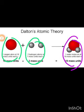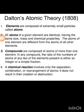According to John Dalton's atomic theory, elements are composed of extremely small particles called atoms. Atoms of a given element are identical, having the same size, mass, and chemical properties. The atoms of one element are different from the atoms of other elements.